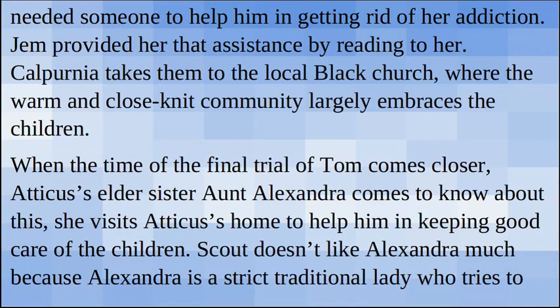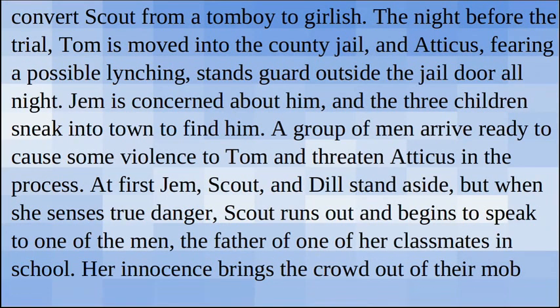Calpurnia takes them to the local black church where the warm and close-knit community largely embraces the children. When the time of the final trial of Tom comes closer, Atticus's elder sister Aunt Alexandra comes to know about this. She visits Atticus's home to help him keep good care of his children. Scout doesn't like Alexandra much because Alexandra is a strict traditional lady who tries to convert Scout from a tomboy to a girlish manner.